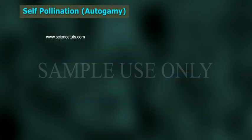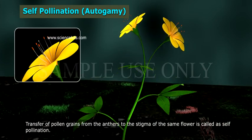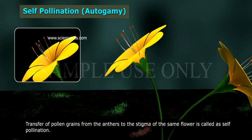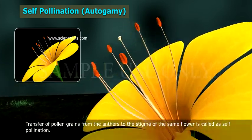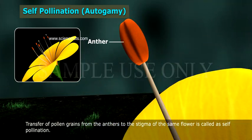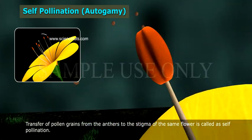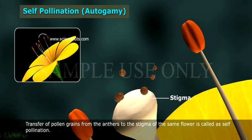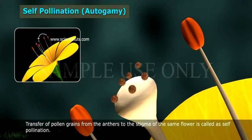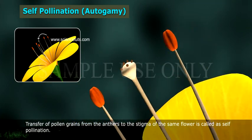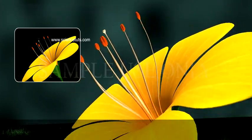Self-pollination, or autogamy, refers to the transfer of pollen grains from the anthers to the stigma of the same flower.